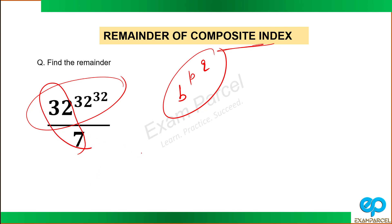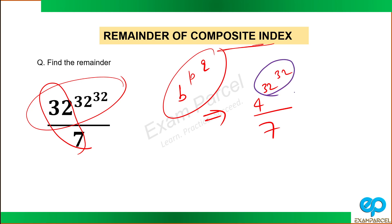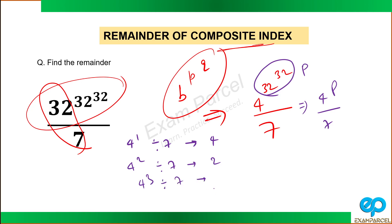First I will reduce the base: 32 divided by 7, remainder is 4, since 7 times 4 is 28. So the problem becomes 4 raised power (32 raised power 32) divided by 7. Now to apply cyclicity, I will treat the exponent as a single variable, say p. So I need 4 raised power p divided by 7. Finding the pattern: 4^1 ÷ 7 gives remainder 4; 4^2 ÷ 7 gives 16 ÷ 7, remainder 2; 4^3 ÷ 7 gives remainder 1. So after a cycle length of 3, remainders start repeating.